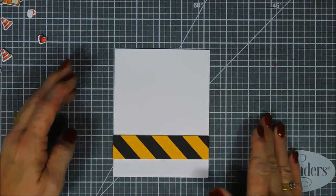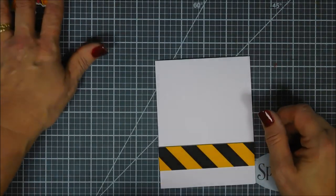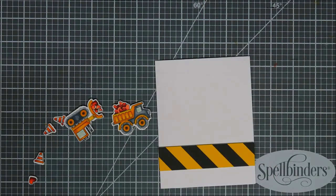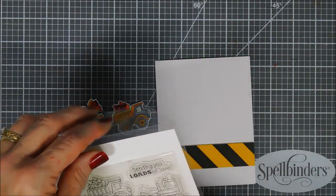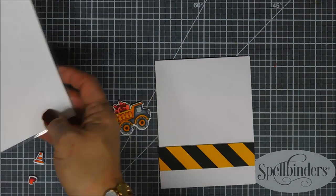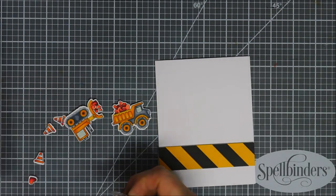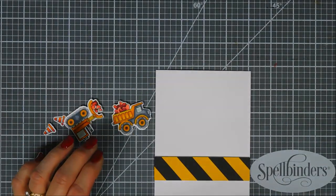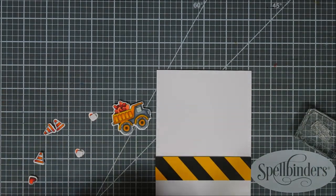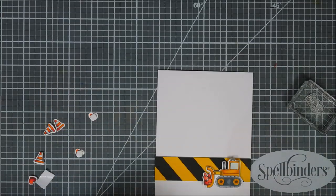We're going to grab our sentiment. I chose the sentiment that says I totally dig you - I think it's super fun. And before we stamp our sentiment, I'm going to kind of arrange where I want my trucks to go and also where I want my safety cones to go. This way I can evenly space my sentiment in between there.